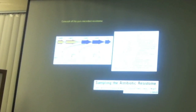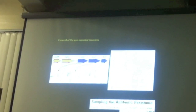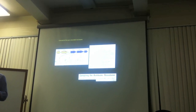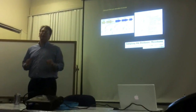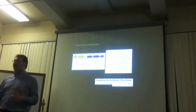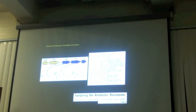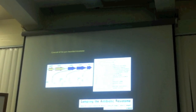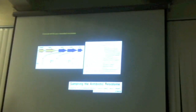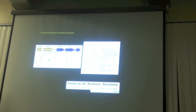Some soil bacteria even carry the vanA locus — the gene that makes bacteria resistant to vancomycin, our antibiotic of last resort for some infections. You can find those genes in soil bacteria. So there's some contribution of humans overusing antibiotics, but there's also this vast environmental reservoir of resistance.